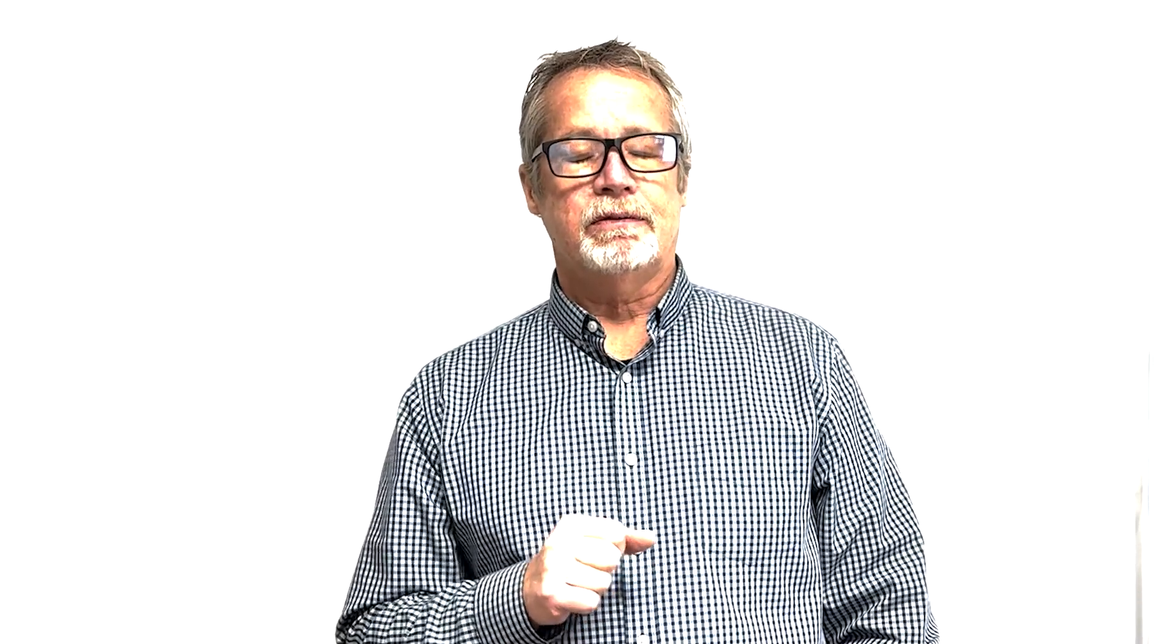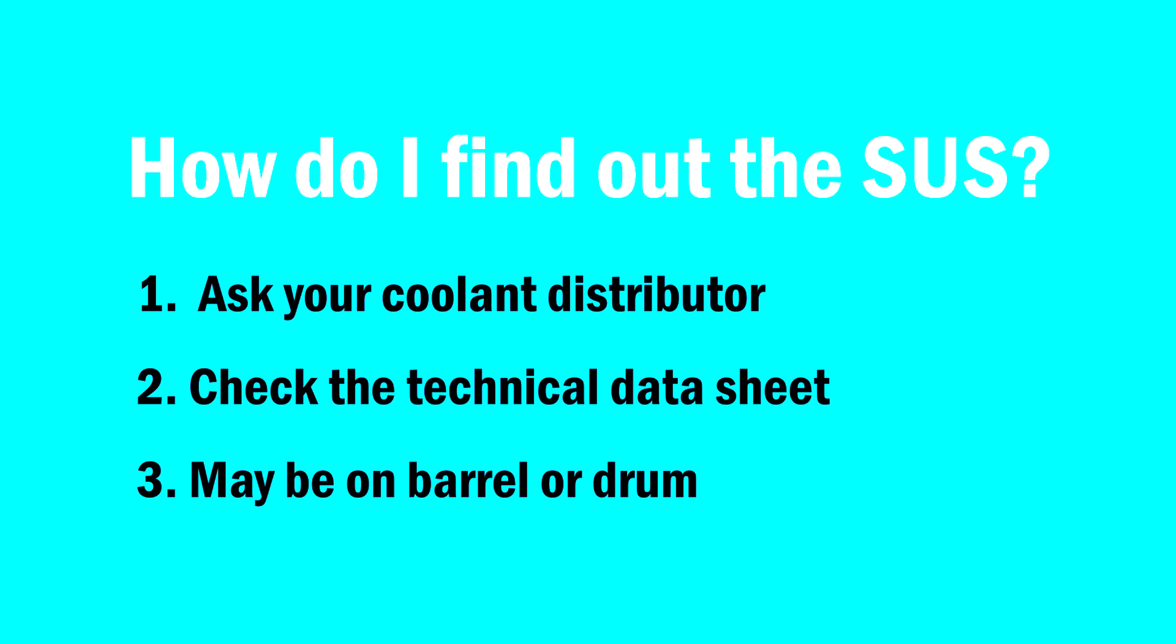So how do you determine the SUS viscosity of your coolant? That's a question I hear all the time. One, you can ask your coolant distributor. Then you can check the coolant technical data sheet. It might be on there. And you can also check on a barrel or drum oftentimes on the tag. It'll say what that correction factor is. Or you can use the quarter drop method. And thanks to our friends at Qualachem who sent coolants from various SUS ratings, you can do this.